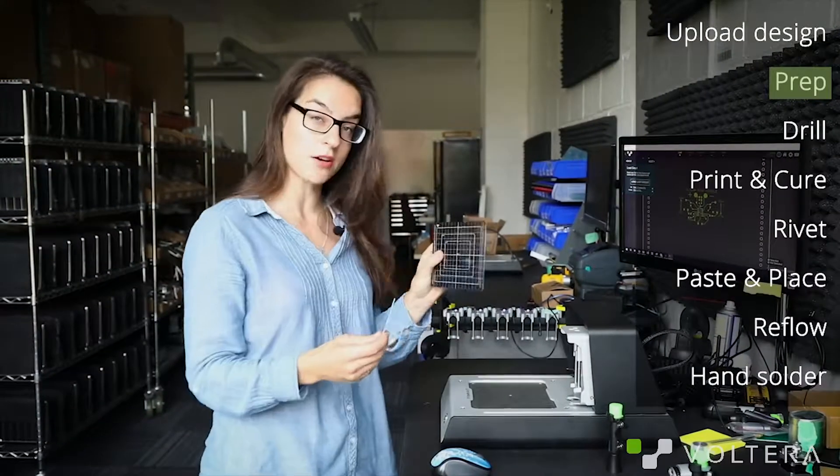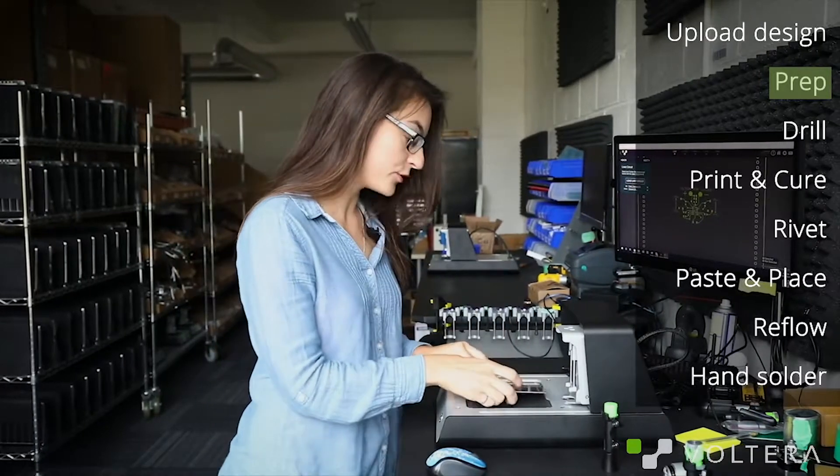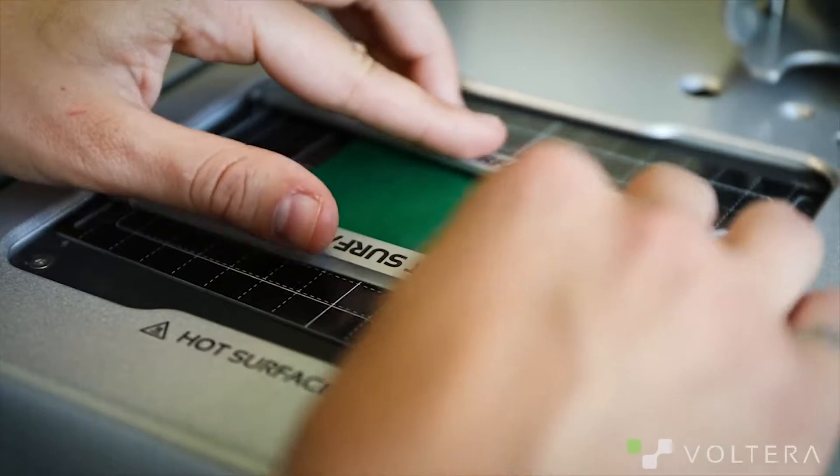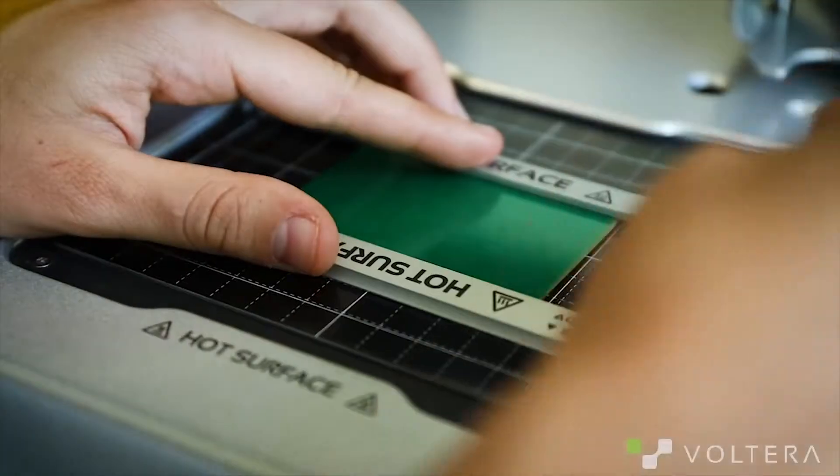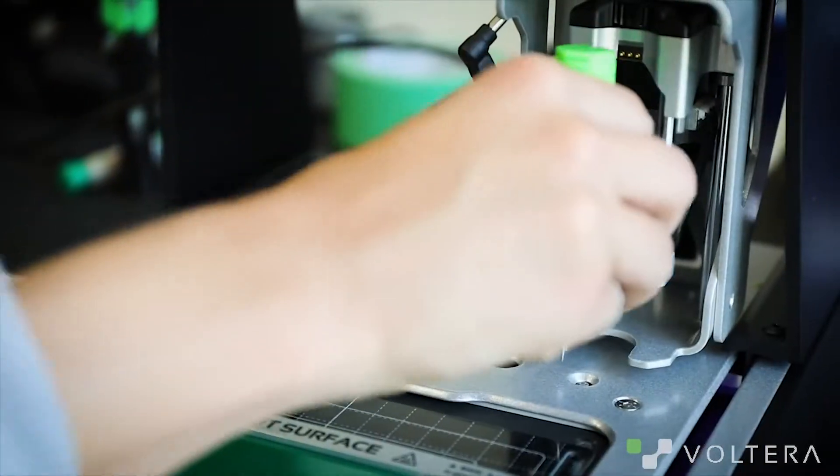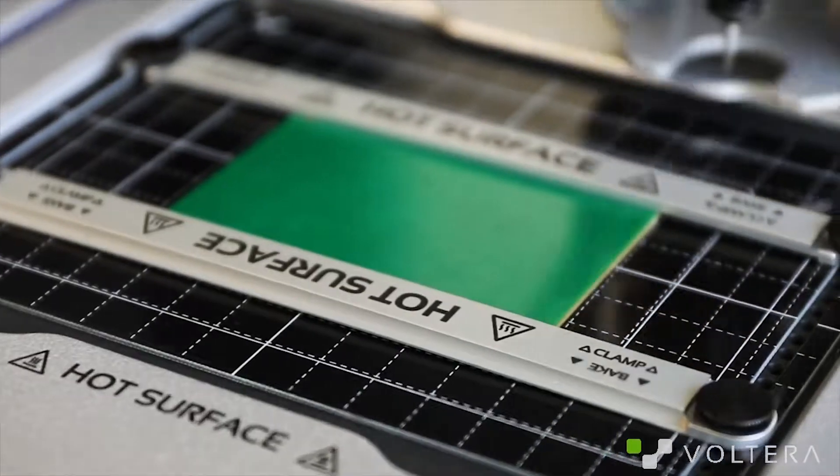Next, clamp down the sacrificial layer and the board. I'm using an FR1 board because we're going to be drilling into it. Once that's secured, snap in the proximity probe. It will be used to generate an accurate map of the surface.